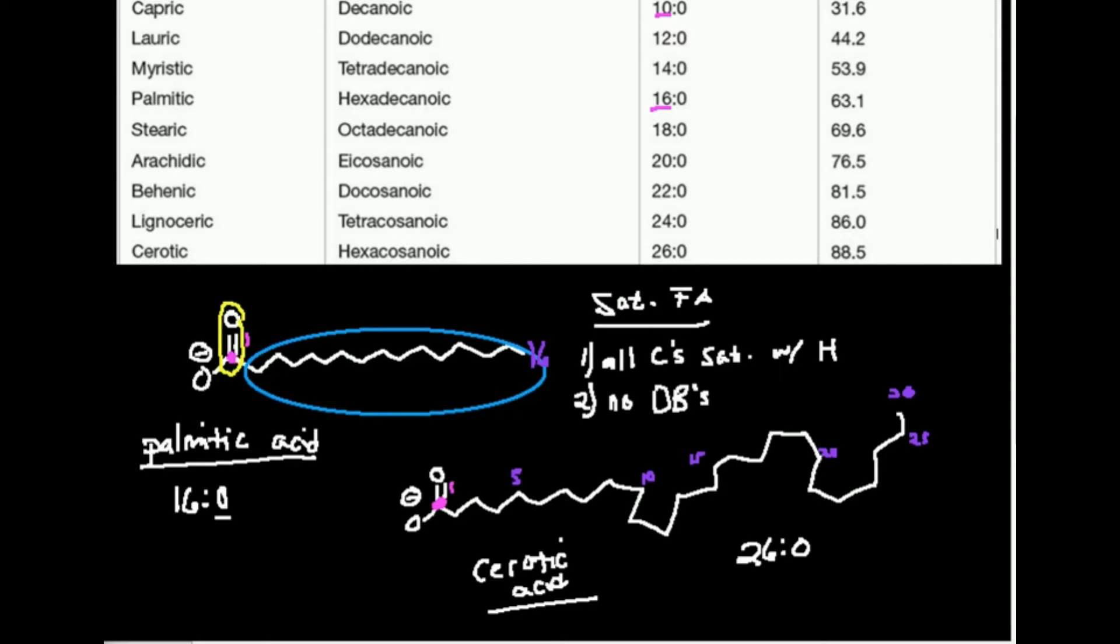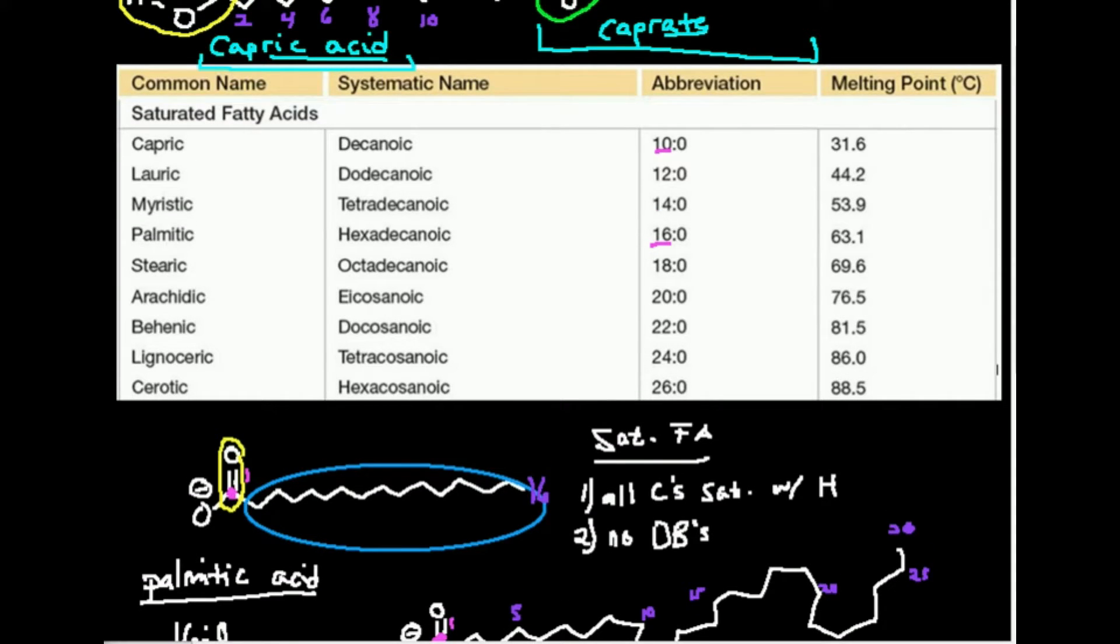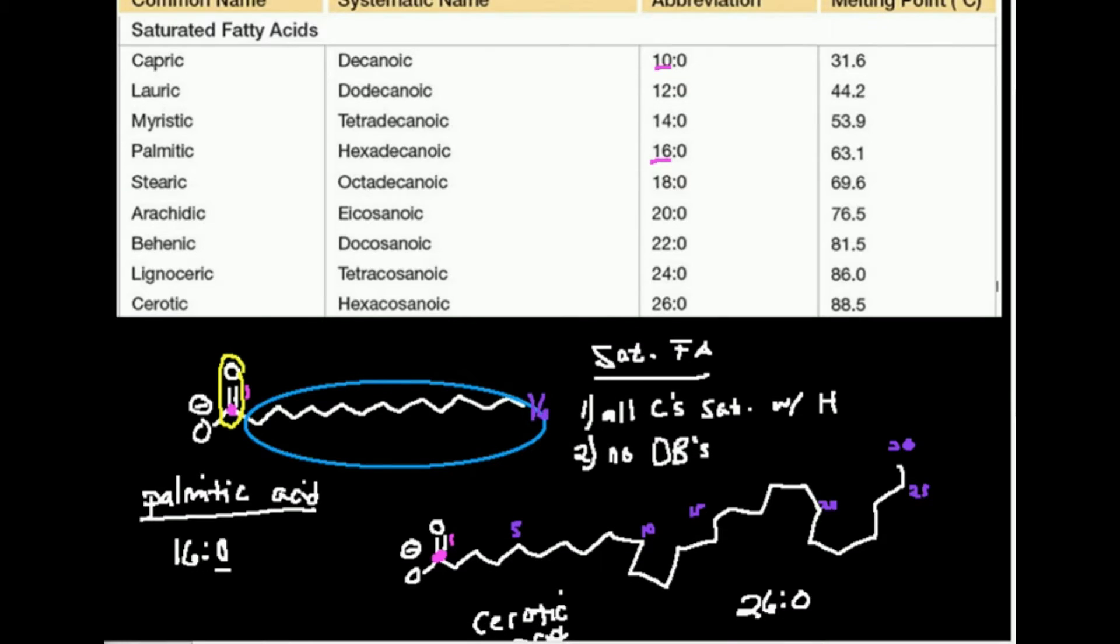Sometimes, instead of giving you the name, they could just give you the abbreviation, which actually makes it pretty easy to draw. If they give you the name, you of course have to know what the number of carbons is for that particular fatty acid. In another video, we'll go over an acronym for remembering those. The systematic names, which are more of the organic IUPAC kind of names—decanoic, dodecanoic, tetradecanoic, and so forth—these names are usually not used. You'll usually never see these names. These names right here are almost never used.